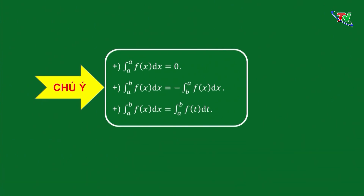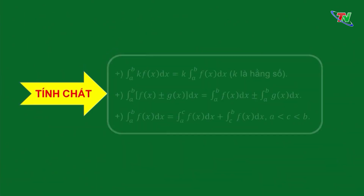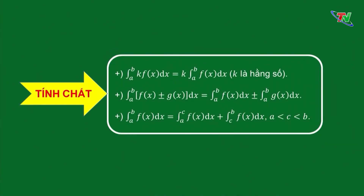Về tính chất của tích phân, chúng ta sử dụng 3 tính chất chủ đạo. Thứ nhất, tích phân từ A đến B của K·f(x) thì bằng K lần tích phân từ A đến B của f(x) với K là hằng số. Tính chất số 2, tích phân của tổng hiệu 2 hàm số thì sẽ bằng tổng hiệu của 2 tích phân. Tính chất này có thể mở rộng thành tích phân của tổng hiệu nhiều hàm số. Tính chất số 3, tích phân từ A đến B của f(x) thì bằng tích phân từ A đến C của f(x) cộng tích phân từ C đến B của f(x) với C thuộc khoảng AB. Tính chất này người ta thường gọi là tính chất chèn cận tích phân.